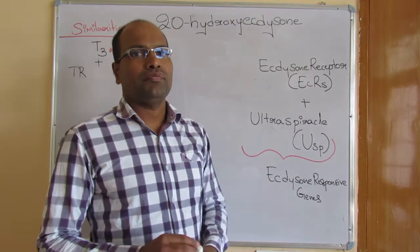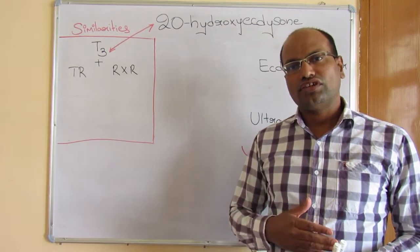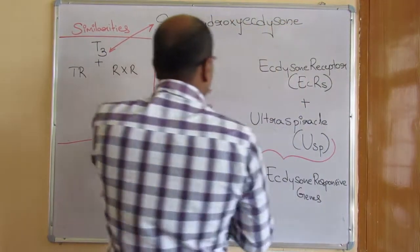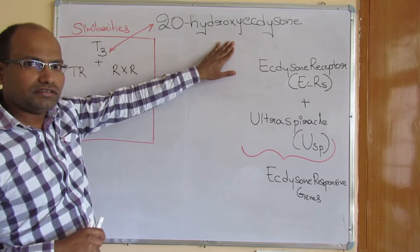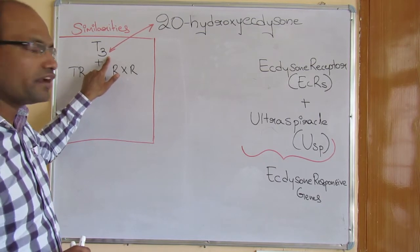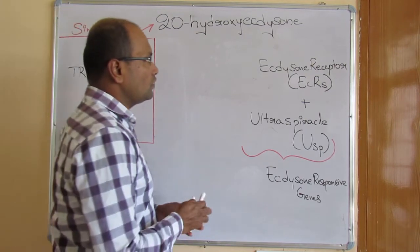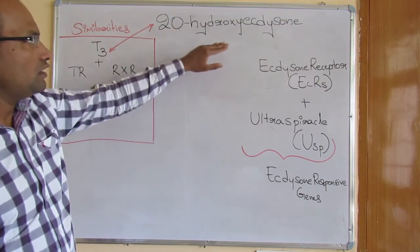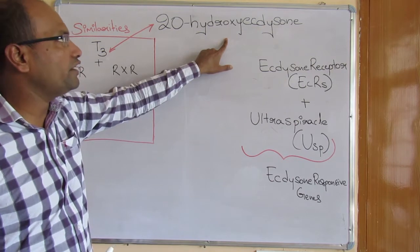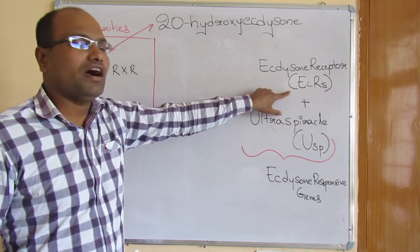It is clear that 20-hydroxy ecdysone along with juvenile hormone is important for insect metamorphosis, playing an important role in development from the larval stage to the adult stage. Now we will see how 20-hydroxy ecdysone is similar to the thyroid hormone — specifically the active form of thyroid hormone, T3 (triiodothyronine).